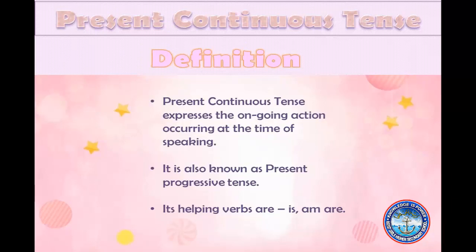Tense gives the concept of time. Now let's see the definition: present continuous tense expresses the ongoing action occurring at the time of speaking. It is also known as present progressive tense, and its helping verbs are is, am, and are. This tense is used to show an action that is going on at the time of speaking.